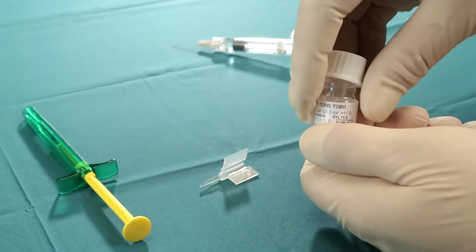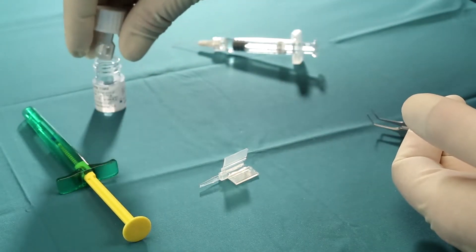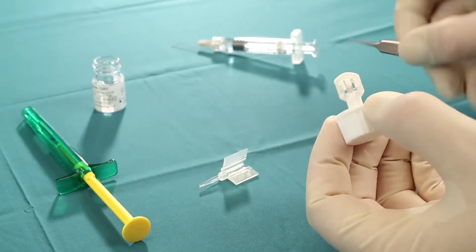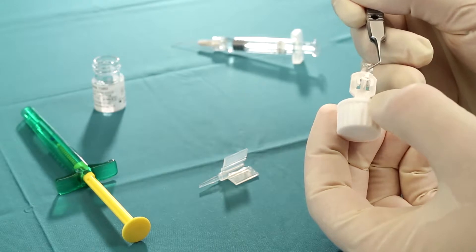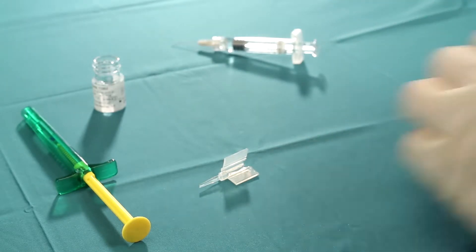Remove the lens from the glass vial with folding forceps. Place the lens in the center of the open cartridge.